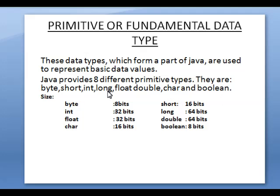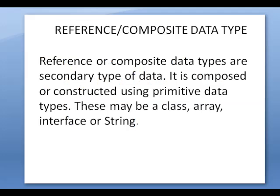Here we will see the size of each type: byte is 8 bits, integer is 32 bits, float is 32 bits, character is 16 bits, short is 16 bits, long is 64 bits, double is 64 bits, and boolean is 8 bits.